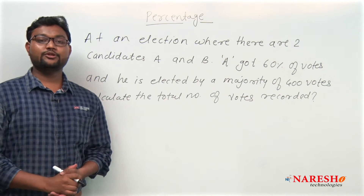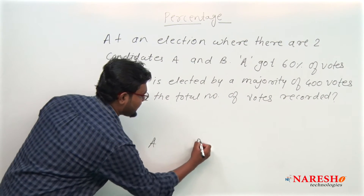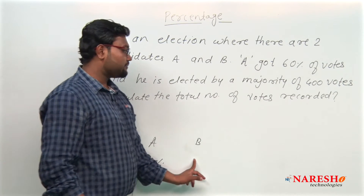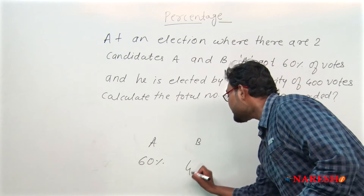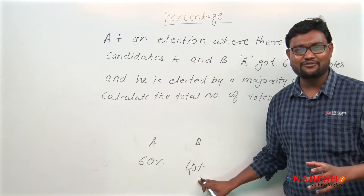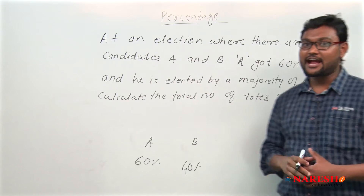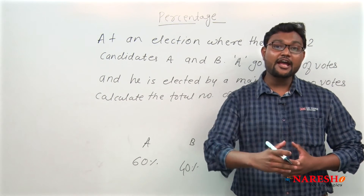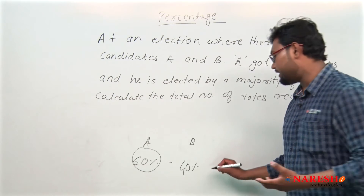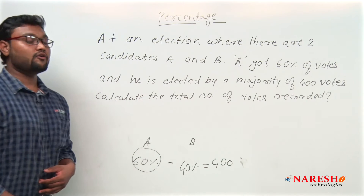We have to calculate the total number of votes. Candidate A got 60 percent of the votes, and B got 40 percent — because from 100 percent, if A is getting 60 percent, B will be getting 40 percent. He is elected by a majority of 400 votes, meaning A got 400 more votes than B. So the difference between their votes is 400.